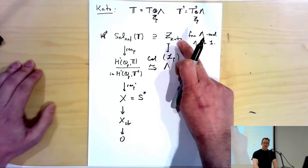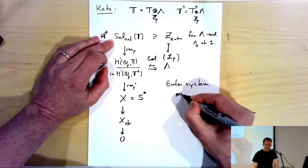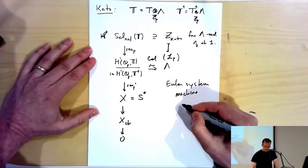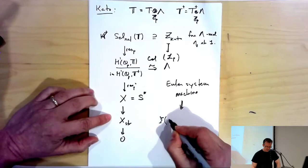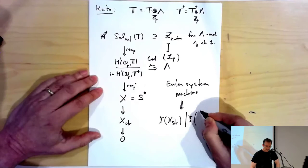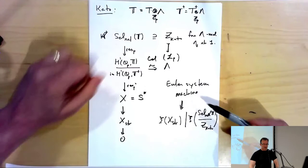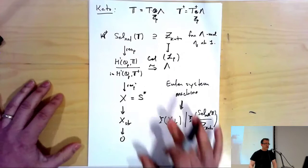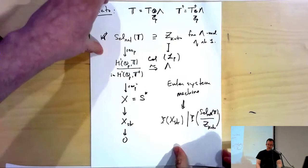The Euler system machine, as developed by Kato and Rubin, implies that the characteristic ideal of the strict Selmer group divides the characteristic ideal of the relaxed Selmer group divided by Z_Kato. So the relaxed Selmer group is a Lambda-module of rank one, and you have this divisibility of Selmer groups. This equality is what I was calling the main conjecture without L-functions. So how do we promote this to the divisibility with the L-function?